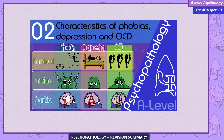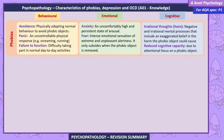Characteristics of phobias, depression, and OCD. Phobias — Behavioral: Avoidance, physically adapting normal behavior to avoid phobic objects; Panic, an uncontrollable physical response such as screaming and running; Failure to function, difficulty taking part in normal day-to-day activities. Emotional: Anxiety, an uncomfortably high and persistent state of arousal; Fear, an intense emotional sensation of extreme and unpleasant alertness that only subsides when the phobic object is removed. Cognitive: Irrational thoughts — negative and irrational mental processes that include exaggerated belief in the harm the phobic object could cause; Reduced cognitive capacity due to attentional focus on the phobic object.